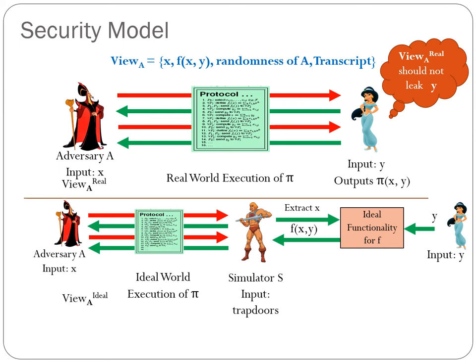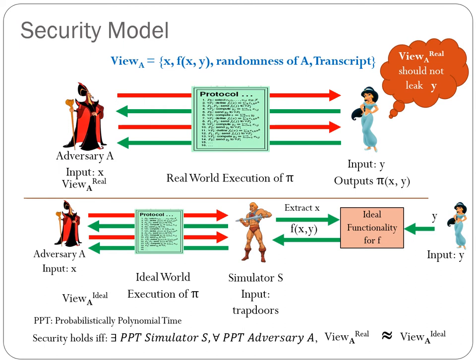We denote the ideal world view of the adversary, and we say that a protocol is secure if there exists a PPT simulator S such that for all PPT adversary A, the real world and ideal world views of the adversary are indistinguishable. We can also consider adaptive corruptions, where all parties are initially honest and can get adaptively corrupted during or after the protocol execution. If a party gets adaptively corrupted, the simulator has to provide the simulated view of the honest party, which must be indistinguishable from the real view even though it was constructed without knowledge of the party's input. Thus, the simulator has to equivocate the simulated view to guarantee adaptive security. This is non-trivial to achieve and is the strongest security model in MPC.